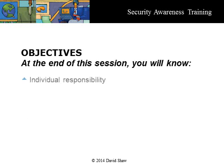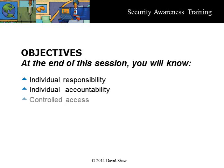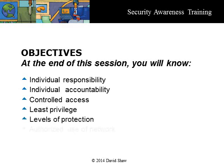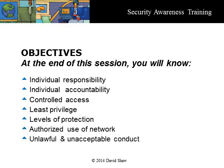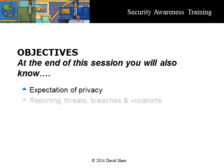At the end of this session you will understand concepts in personal responsibility and accountability. Other concepts covered are controlled access to systems, least privilege to system rights, and levels of protection. We will also cover the authorized use of a system and unlawful and unacceptable conduct. You will also understand the expectation of privacy at work and how to report threats and other incidents.